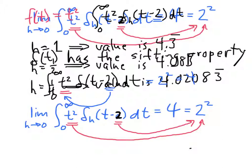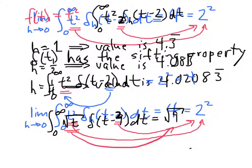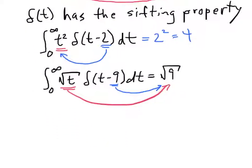To look at another example, if we had the integral from 0 to infinity of the square root of t times delta of t minus 9 dt, what we would get from this is simply the square root of 9. So again, what's happening is this is our function and this is the value that's going into the function. So let's do one last one of those.